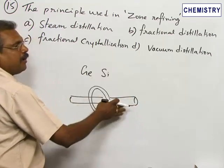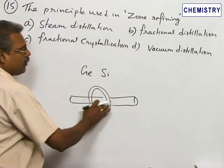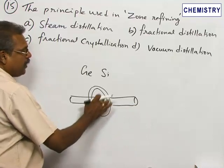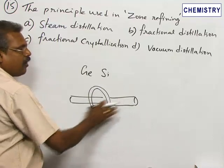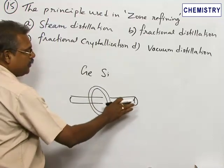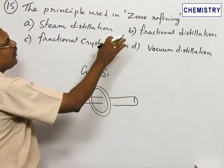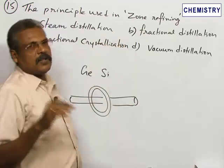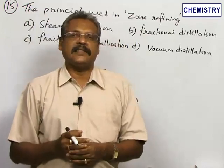The circular coil is a movable circular coil. Sometimes the coil is fixed and the rod can be moved here and there. Therefore, zone refining is on the principle of fractional crystallization. Go for option C: fractional crystallization.